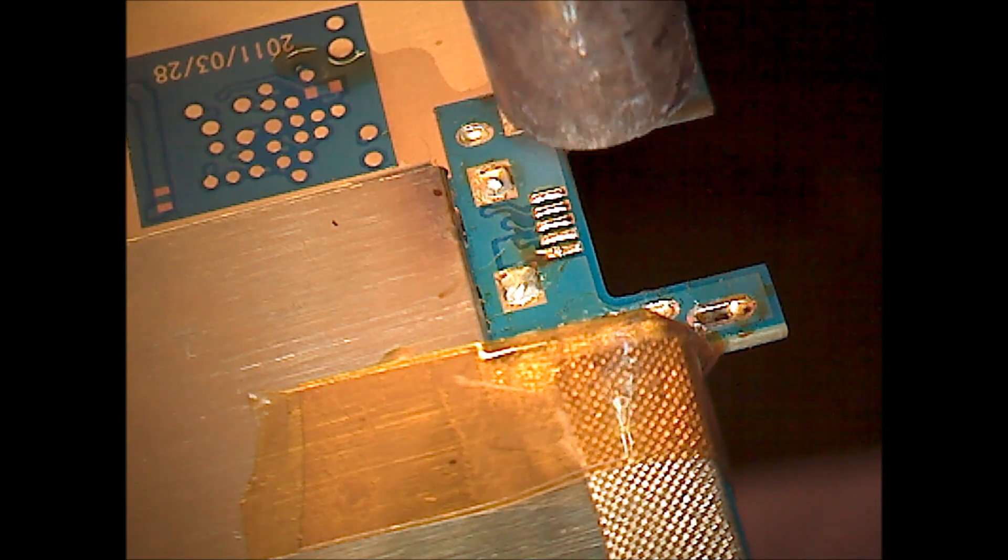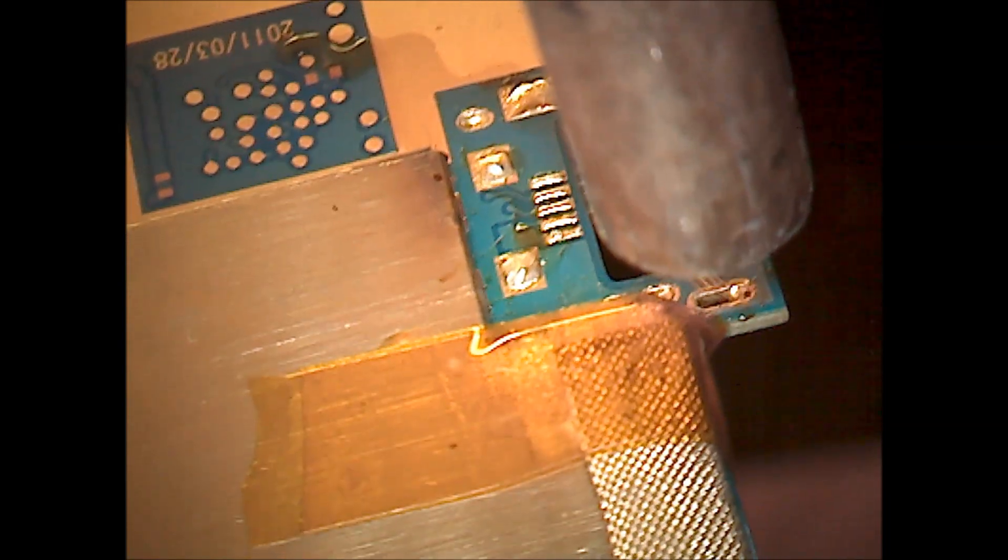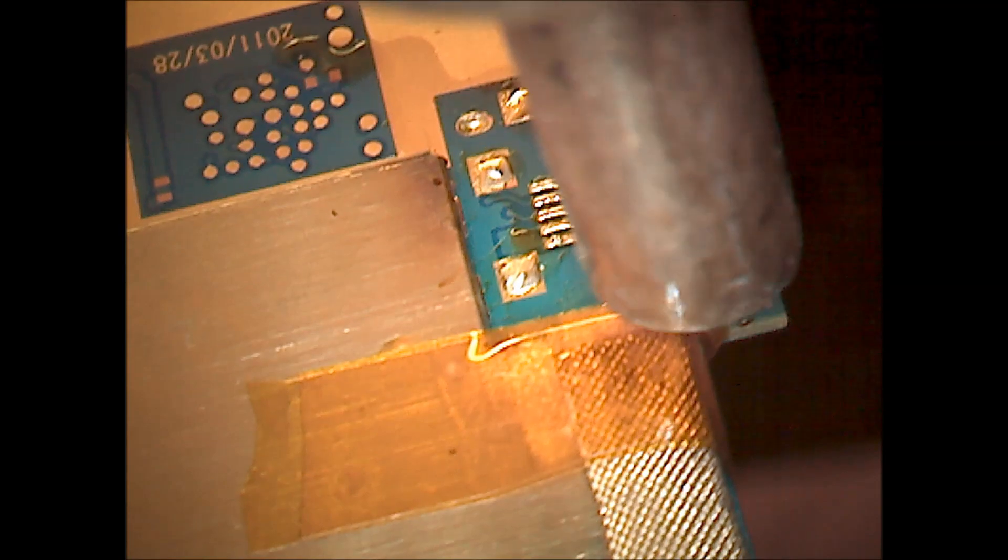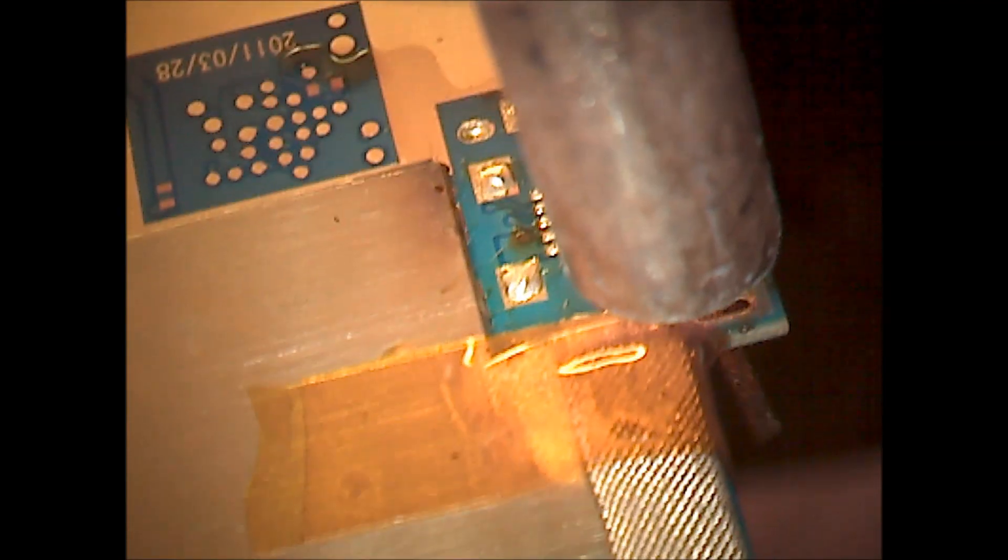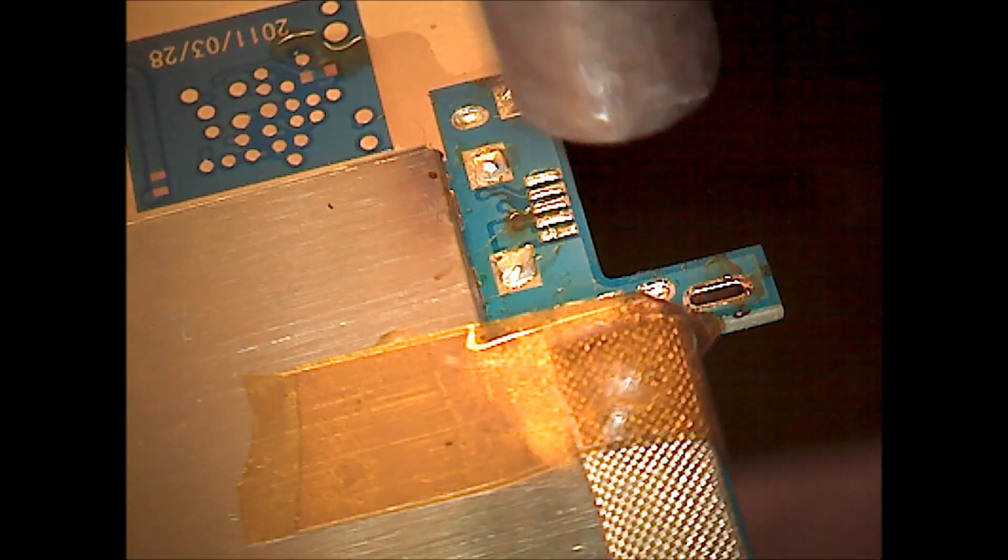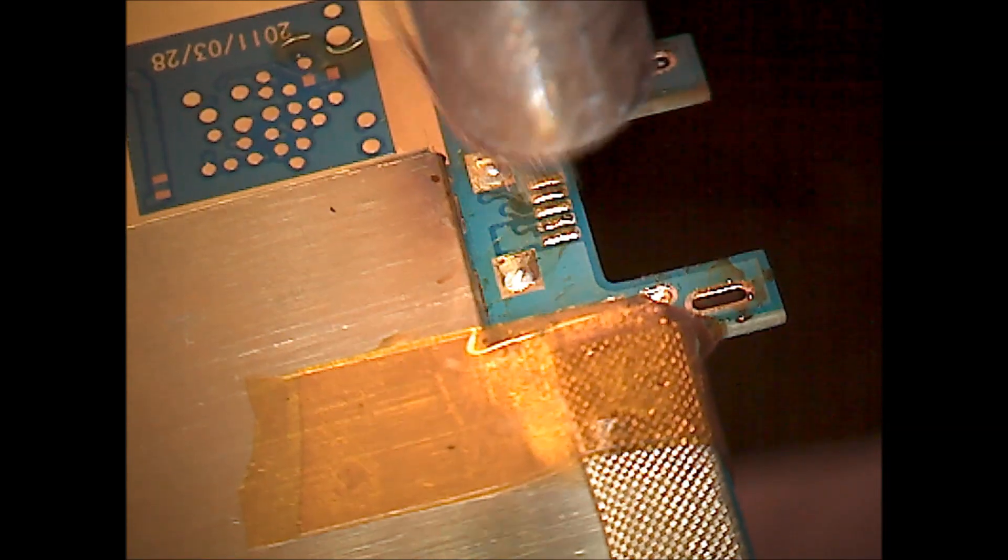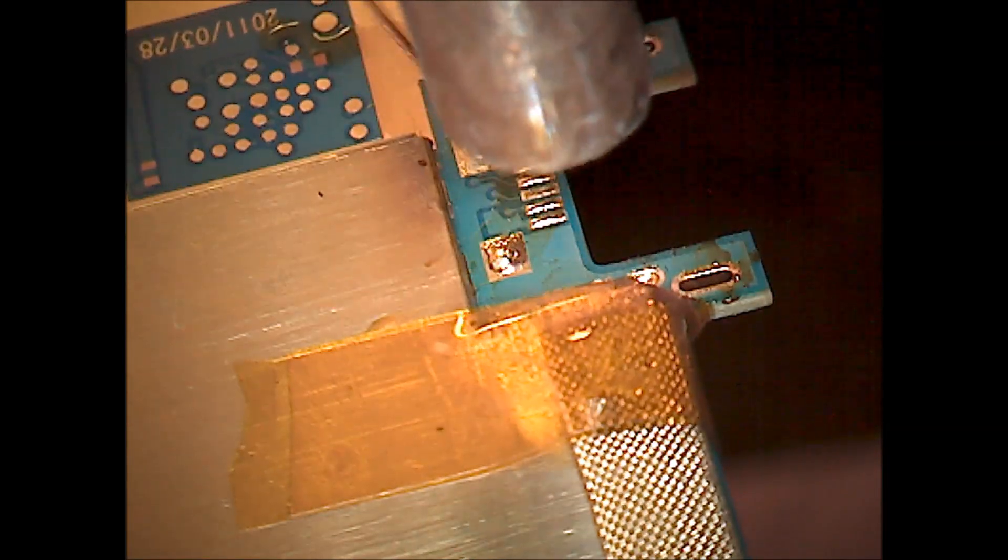As you see right there, we're just taking some of that copper braid and putting it right through the holes. We've got some flux paste, a little flux pen that we use to put flux on the copper braid, and it helps the solder suck right up into it. And then we've just folded that copper braid in half there.